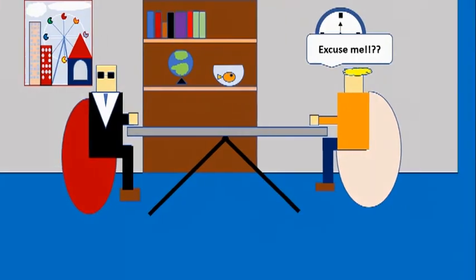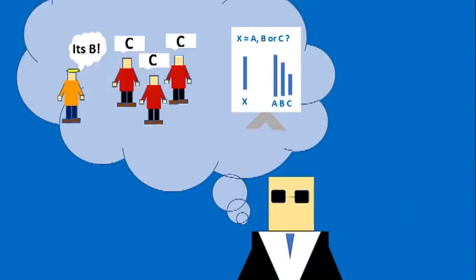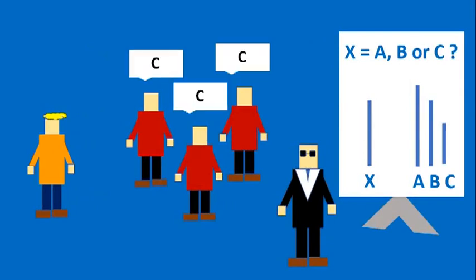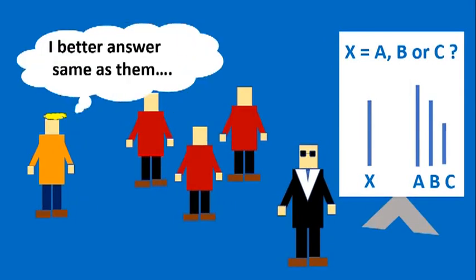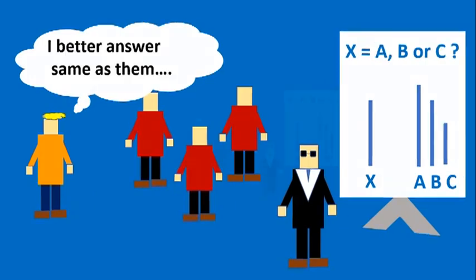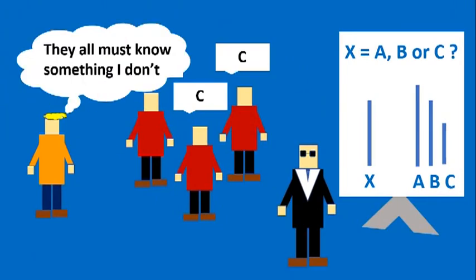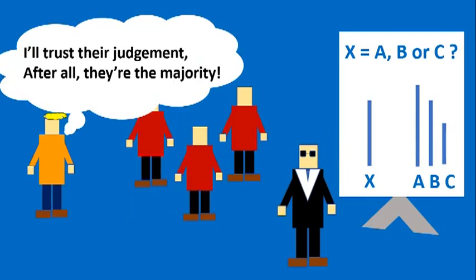Solomon Asch was able to pinpoint two critical reasons why conformity takes place. The first reason is that the participants don't want to be made fun of, so they sided with the majority. And the second reason, the participants actually believed that the majority, who was giving wrong answers on purpose, might know something which they do not, so they sided with the majority, trusting their judgment.